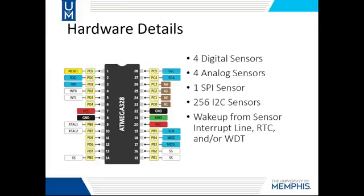This image better shows the connections on the microcontroller. Each node supports four digital sensors on PD4, 5, 6, and 7, and four analog sensors on A1, 2, 3, and 4. Additionally, the full SPI bus is broken out with three slave select lines available. One is used for the real-time clock, another for the transceiver or SD card depending on the mode, and the third is for use by the end user for a sensor. Additionally, the I2C bus is broken out as well as the UART peripheral.